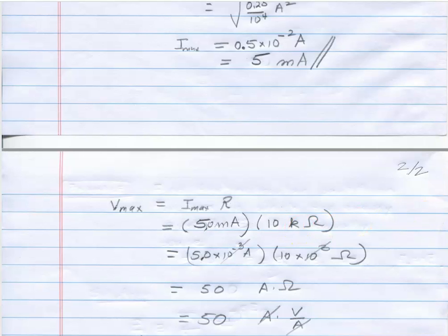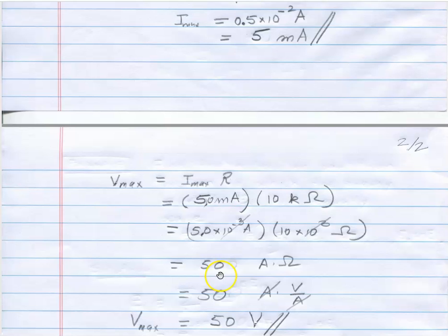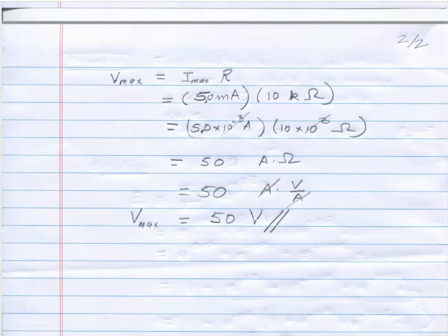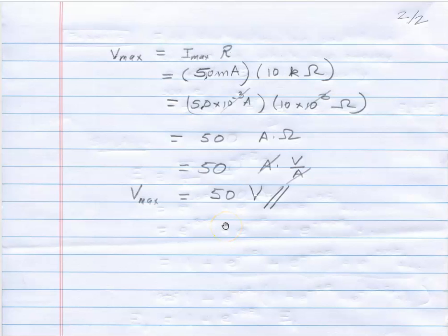The resistor is 10 kilo ohms and if you multiply that out I get 50. The milli and the kilo will cancel. Ampere times an ohm. An ohm remember is a volt per ampere so the amperes cancel and we get the maximum voltage that I should ever put across that resistor is 50 volts.